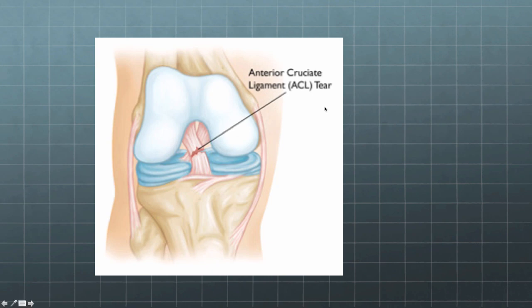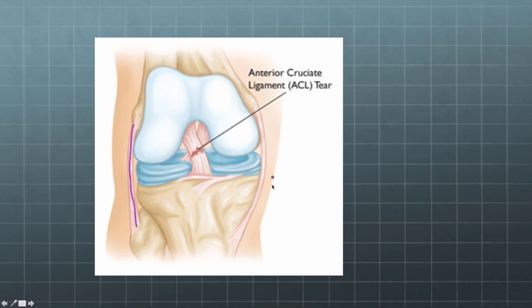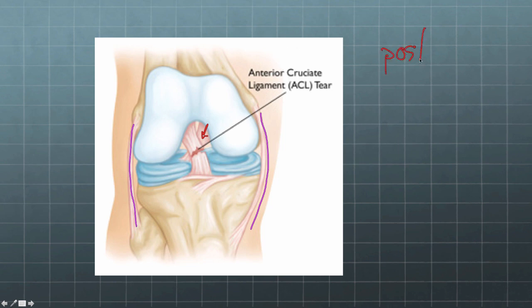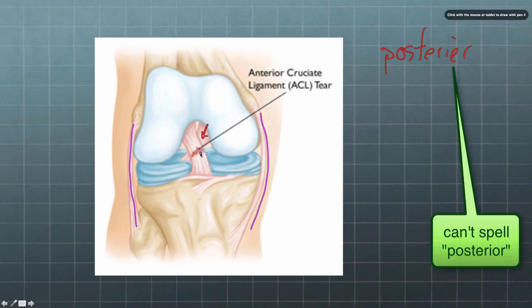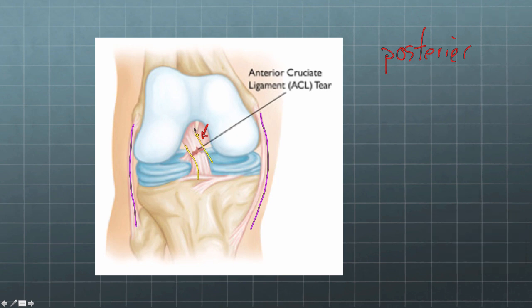This is a drawing of the anterior cruciate ligament, often called the ACL. On the inside is the medial collateral ligament, and on the outside is the lateral collateral ligament. In the back is the posterior cruciate ligament — posterior means behind, anterior means front. A torn ACL is right under where the kneecap would be.